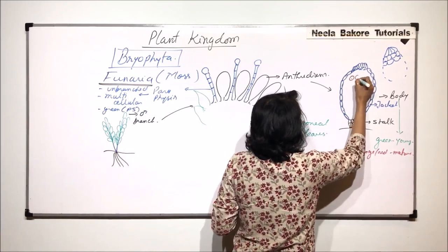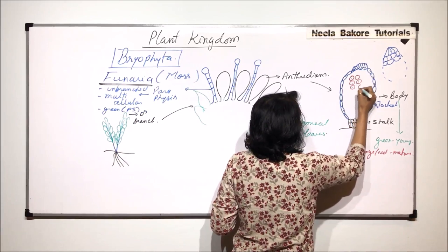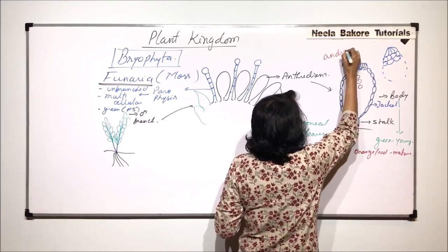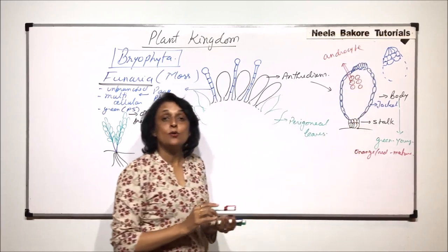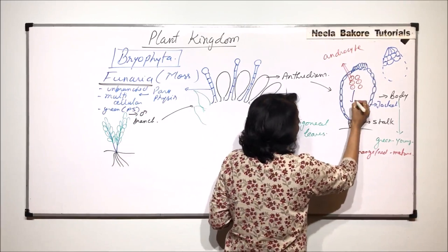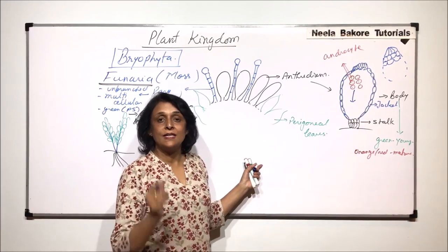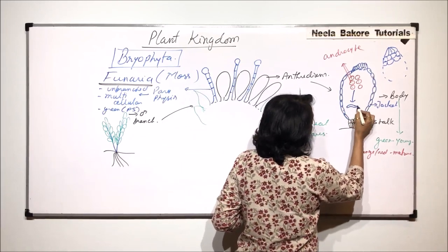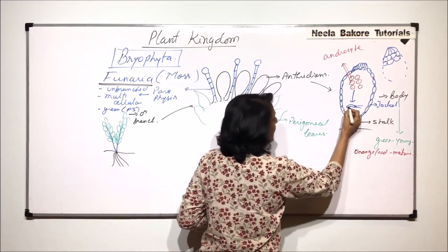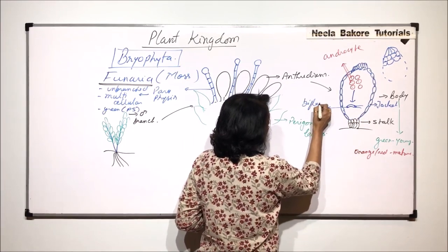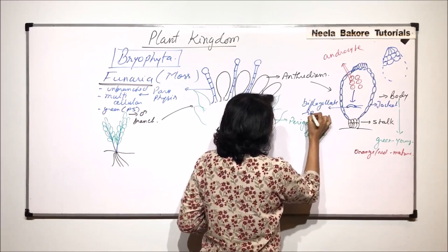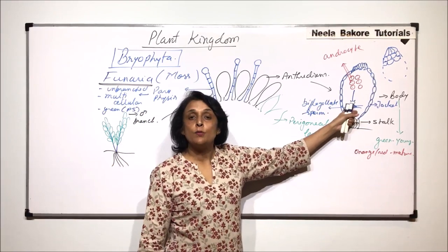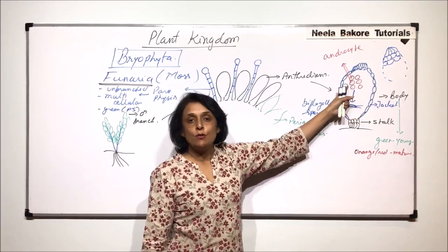Inside here there are cells. It is filled with cells and these cells are known as the androcytes. Each androcyte is going to get differentiated. That means here division is not taking place. Each cell is getting differentiated into a biflagellate sperm. There are two flagella and this is a biflagellate sperm which is formed by the process of differentiation.